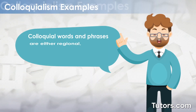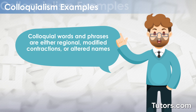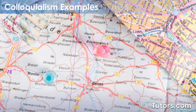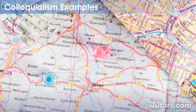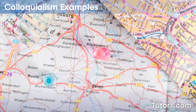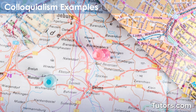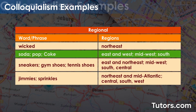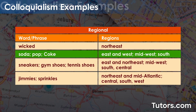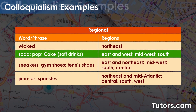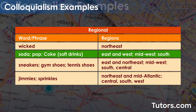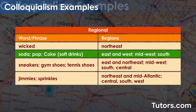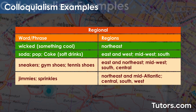Colloquial words and phrases are either regional, modified contractions, or altered names of objects and family members. Regional colloquialisms often lead to multiple words meaning the same thing. In different regions of the country, you might hear someone say soda, pop, or coke when talking about soft drinks. Some colloquialisms only exist in one region, like using wicked for something cool.